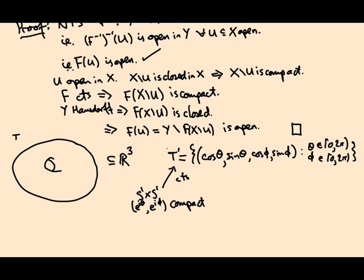This guy, T prime, is a subspace of a Hausdorff space. And it's not too hard to convince yourself that a subspace of a Hausdorff space is Hausdorff. So this is a continuous bijection between compact and Hausdorff spaces. So this is a homeomorphism. So I need to do something similar here. And the same argument will apply provided I can write down a suitable continuous bijection.